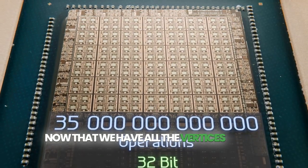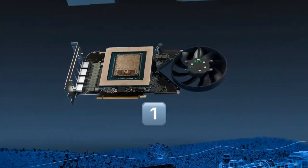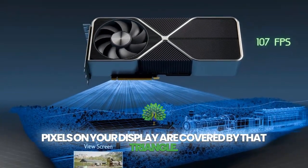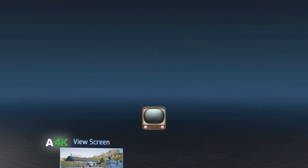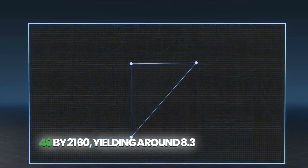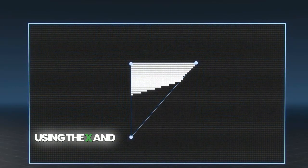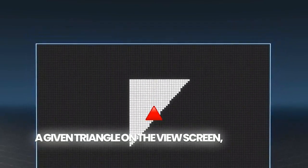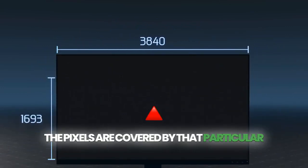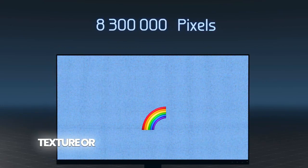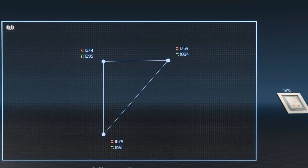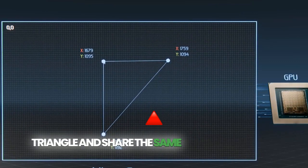Now that we have all the vertices moved onto a 2D plane, the next step is to use the three vertices of a single triangle and figure out which specific pixels on your display are covered by that triangle. This process is called rasterization. A 4K monitor or TV has a resolution of 3840 by 2160, yielding around 8.3 million pixels. Using the X and Y coordinates of the vertices of a given triangle on the view screen, your GPU calculates where it falls within this massive grid and which pixels are covered by that particular triangle. Those pixels are then shaded using the texture or color assigned to that triangle. With rasterization, we turn triangles into fragments, which are groups of pixels that come from the same triangle and share the same texture or color.